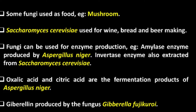Some species of fungi are used as food — example: mushroom. Saccharomyces cerevisiae is used for wine, bread, and beer making. Fungi can be used for enzyme production — example: amylase production using Aspergillus niger, invertase production using Saccharomyces cerevisiae. Oxalic acid and citric acid are fermentation products of Aspergillus niger. Gibberellin is produced by the fungus Gibberella fujikuroi.